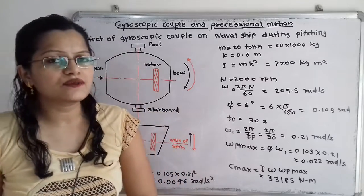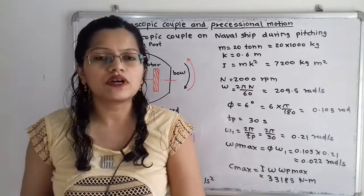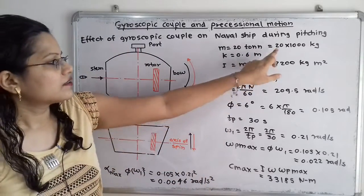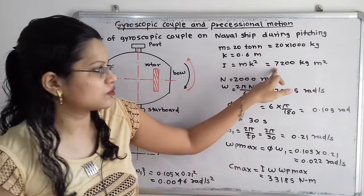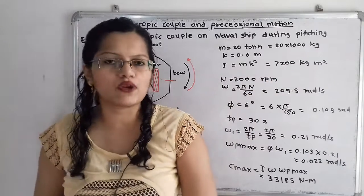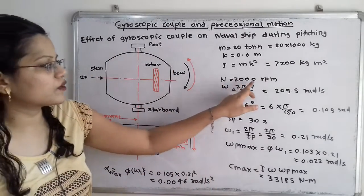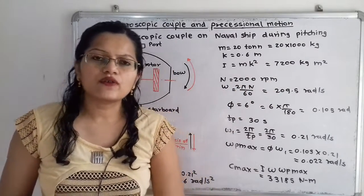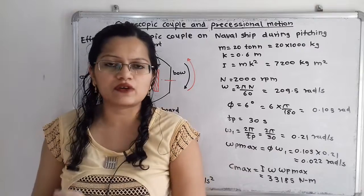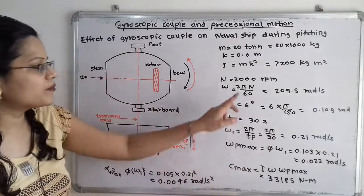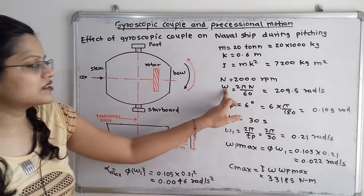We calculate the mass moment of inertia of the rotor: I = m × k² = 20,000 × (0.6)² = 7,200 kg·m². Then for the rotor, the rotational speed is given as n = 2000 rpm. We calculate its angular velocity: ω = 2πn/60, giving 209.5 rad per second.